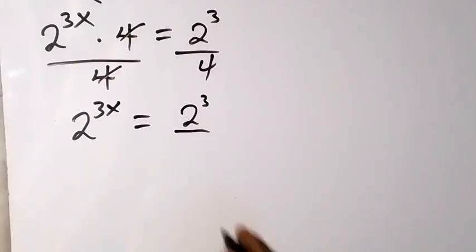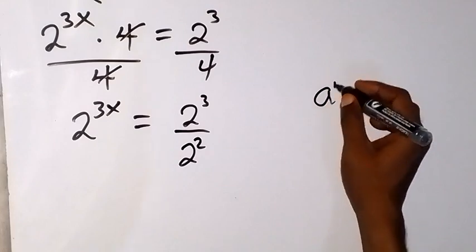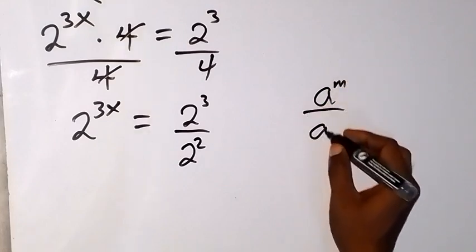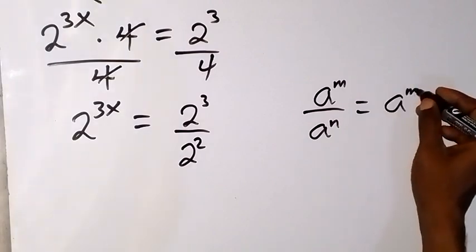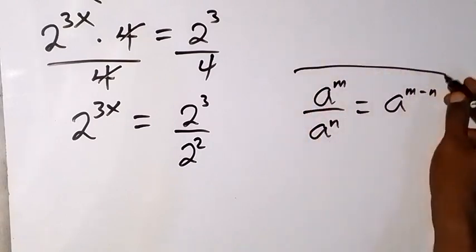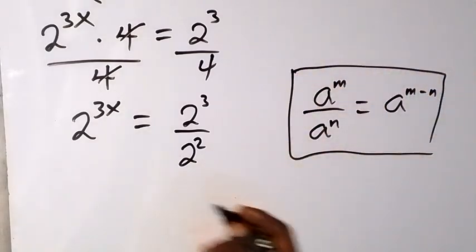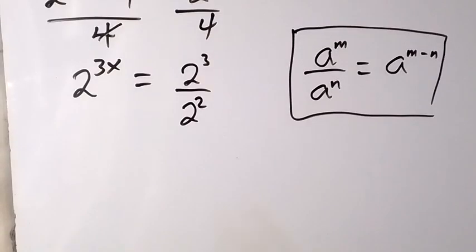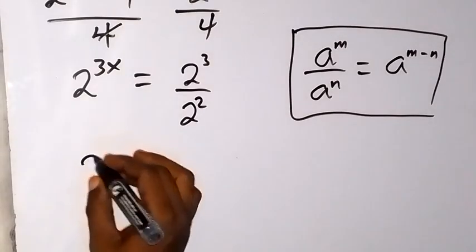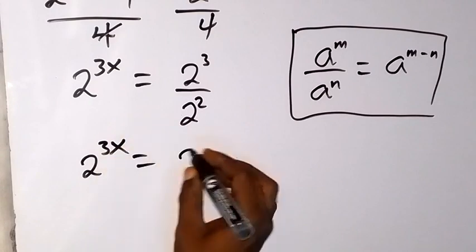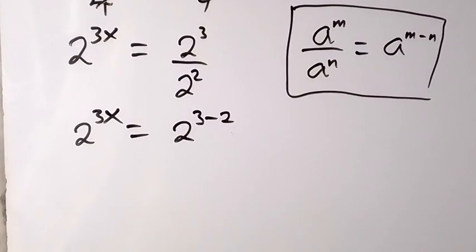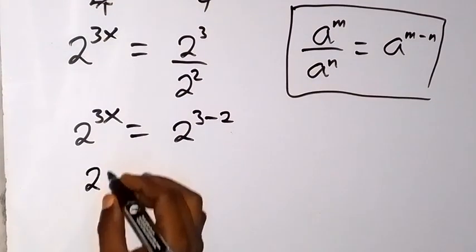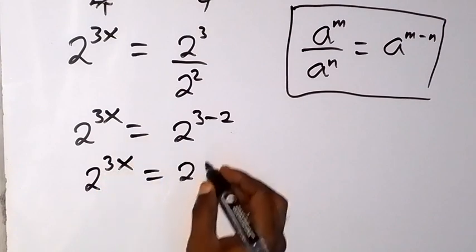From the law of indices, when we have a^m divided by a^n, we can write this as a^(m - n). So we subtract the powers when dividing terms with the same base. That means we can write this as 2^(3x) equals 2^(3 - 2), and 3 minus 2 is 1.